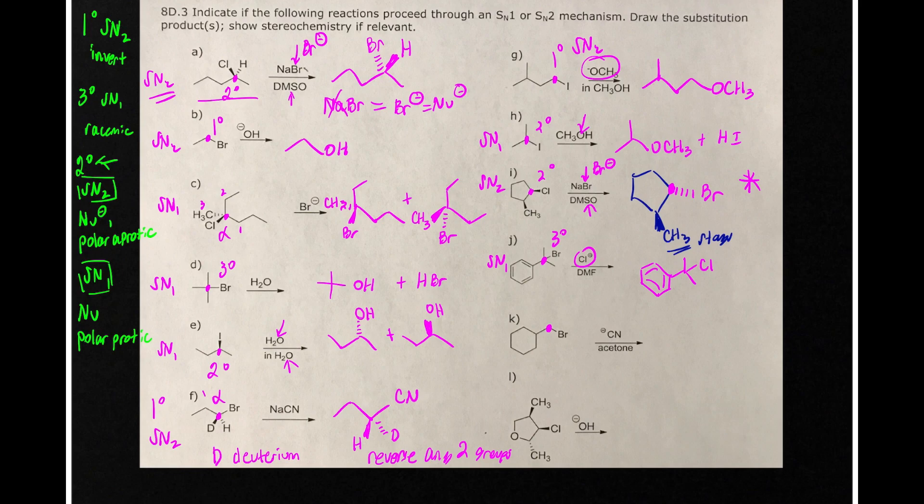Same thing here, no stereochemistry. This is primary, so this proceeds by SN2. Here's our nucleophile. So all we need to do is replace that Br with a CN group.